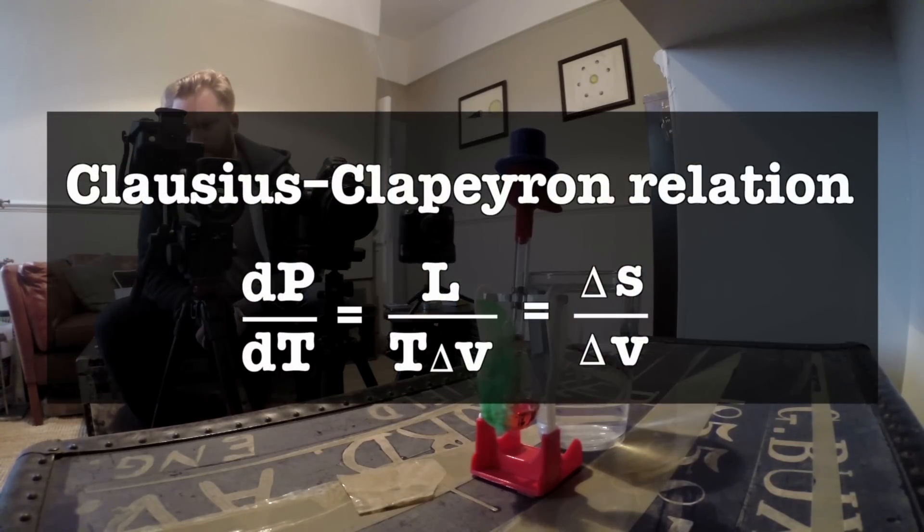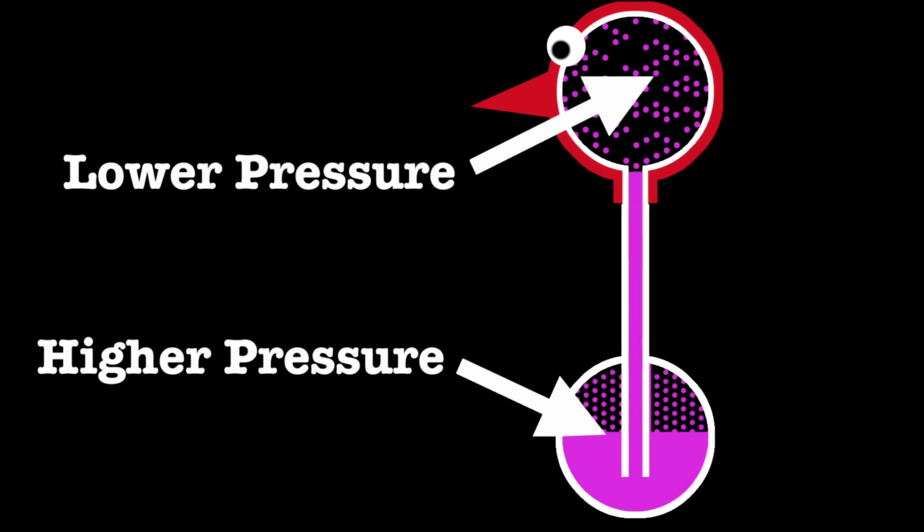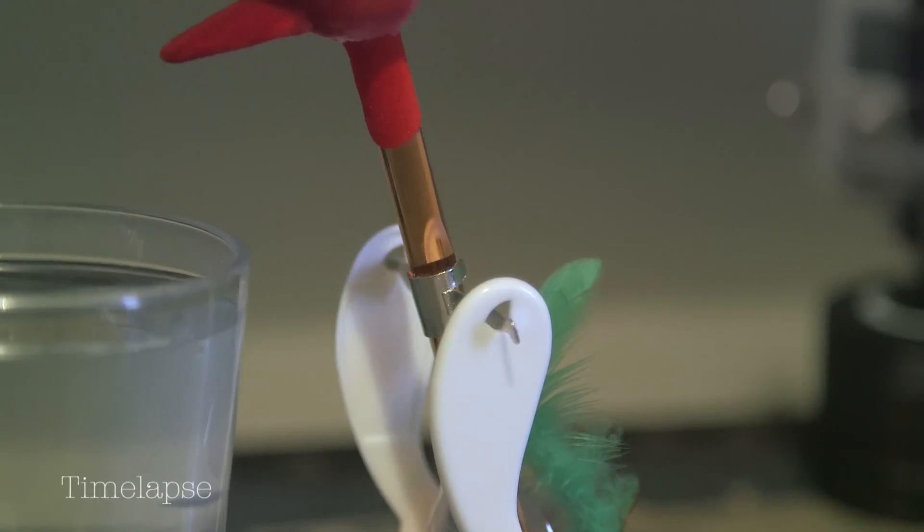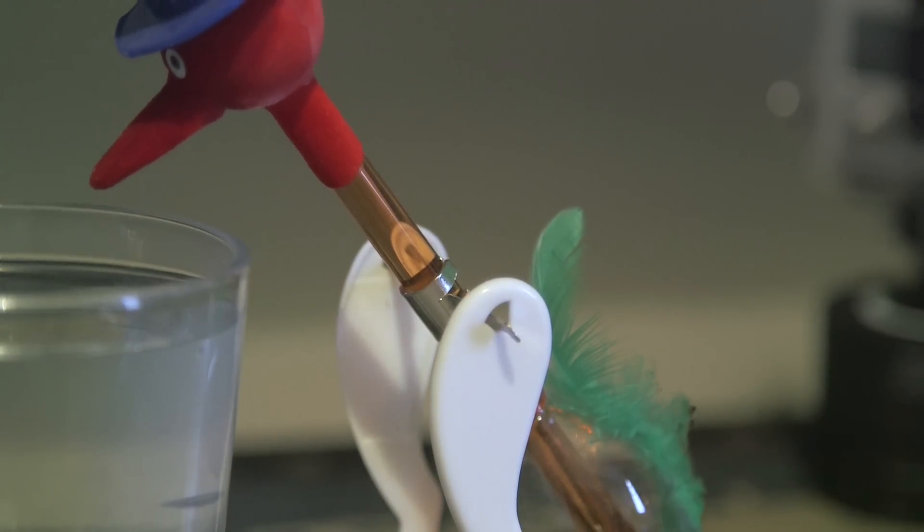Anyway, the important thing is, the higher pressure down here, where it's not cool, starts forcing liquid up the tube. We can see it. And eventually, due to the toy's design, the bird becomes top-heavy and tips over.